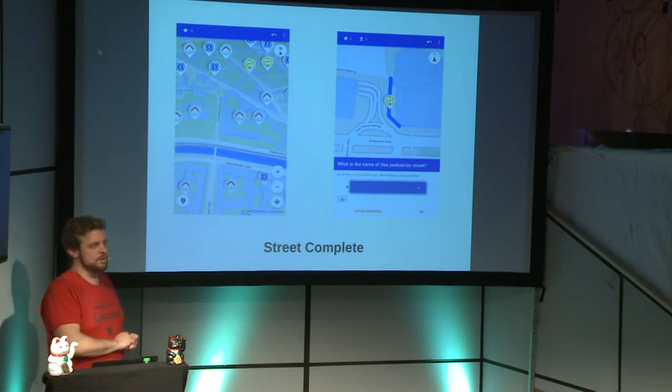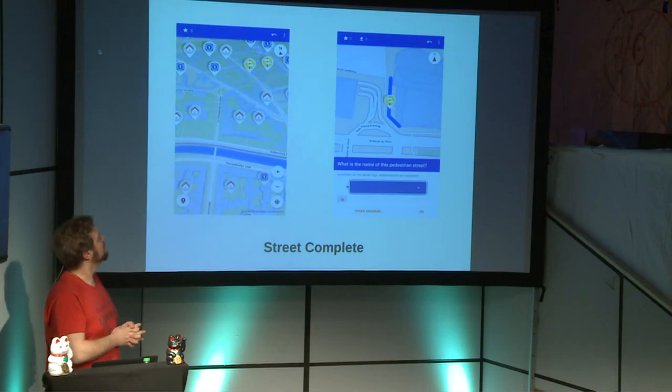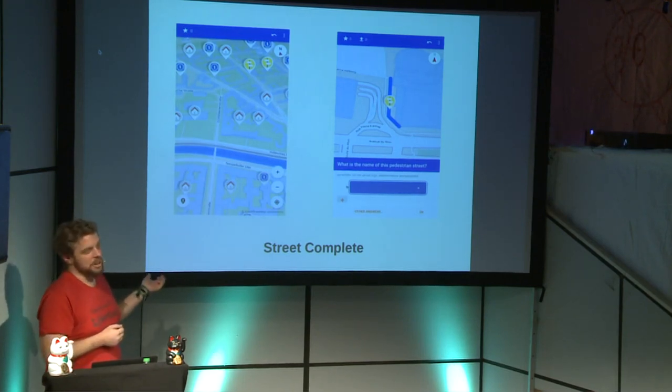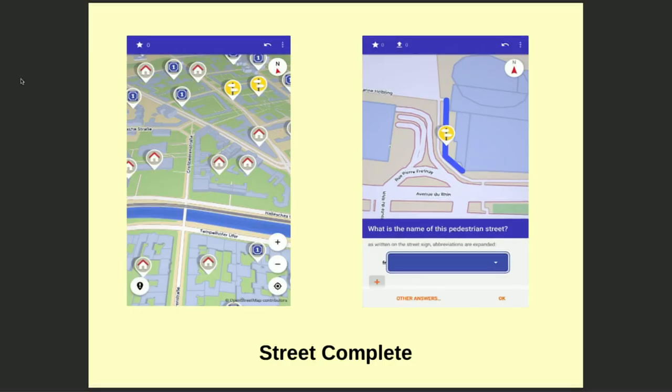To finish the OpenStreetMap-related part: StreetComplete is a really nice app I just discovered recently. You walk around and you see quests — tap on one and it asks you: what is this house number, what is the name of this road, what is the surface of this road. It's a bit like geocaching — you have quests to follow and with each contribution you make the map a way better.